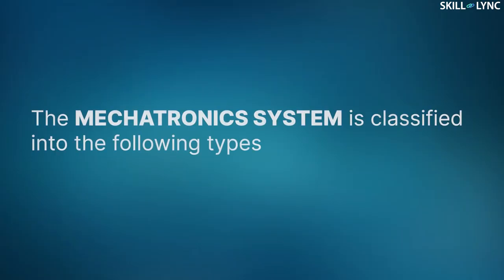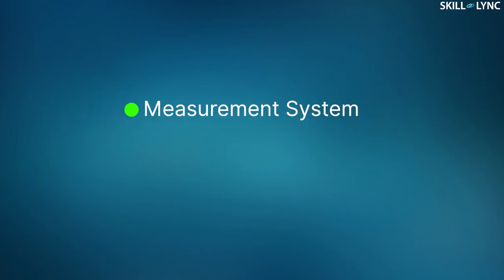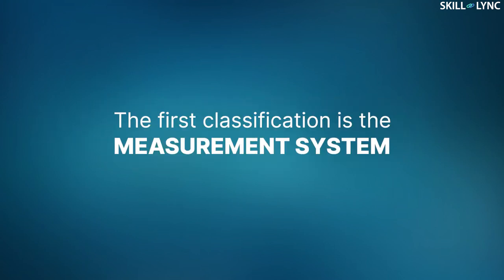Mechatronic systems are classified into the following types: measurement system and control system.